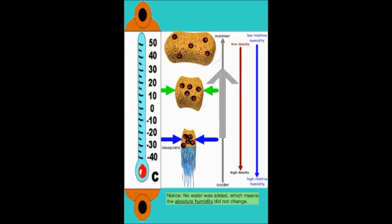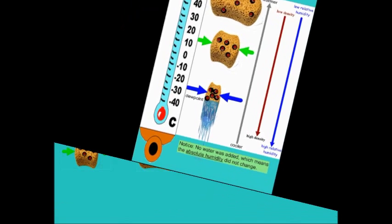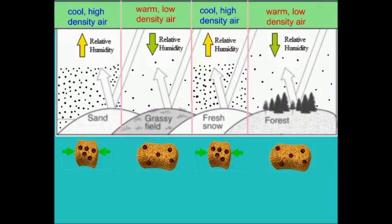As you increase the temperature of the air, you tend to decrease its density, and you also tend to decrease its relative humidity. And again, that's because as you decrease the density, you increase the capacity. This means that cool, high-density air tends to have a higher relative humidity than warm, low-density air.